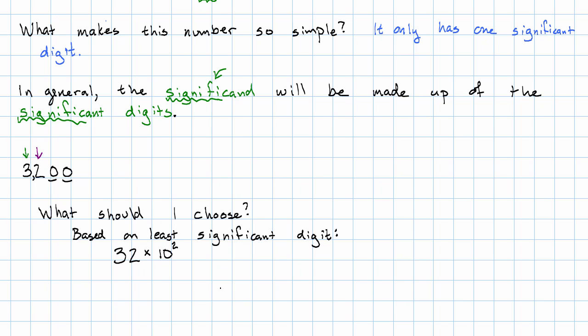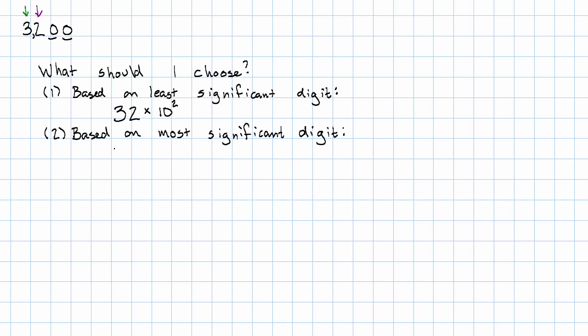Or I could look at the place that the most significant digit is in. I want to have the digits 3 and 2, but now I want to use 10 to the third. The way I have to do that is by writing 3.2. Notice if I do the arithmetic here, 3.2 times 10 to the third, that's 3.2 times 1000. That's 3200. Move the decimal point three places to the right.